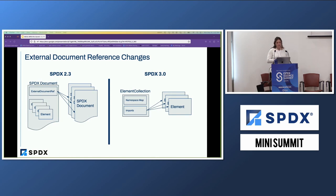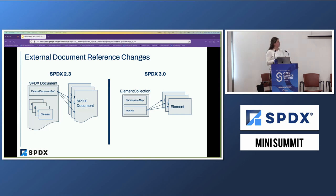One of the big structural changes in 3.0 is external document references. In 2.3, if you wanted to reference an element or a document not in SPDX, you would use an external document that points outside of the document. In 3.0, we've moved this into an element collection so it can support external references more easily. We now have two classes of external references: imports — information about where I got it from, the package, and the checksum of the SPDX document — and the namespace map, which is information about shorthand references within the document itself, making it readable and easily referenceable.